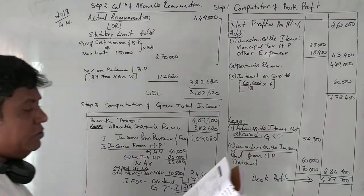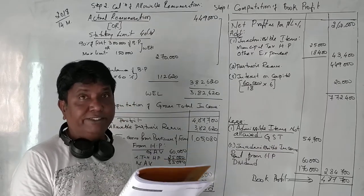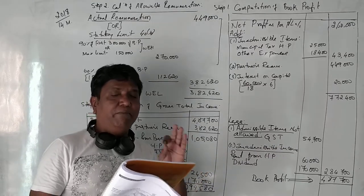This is a 2018 question paper. Profit and loss account of Vijay Lakshmi Company, a partnership firm. It is not a company, it is a partnership firm.